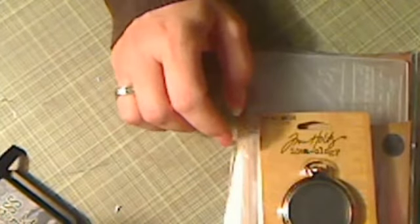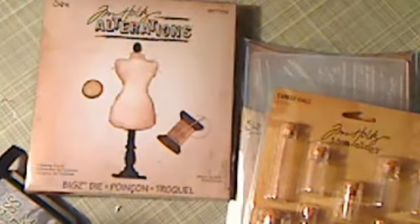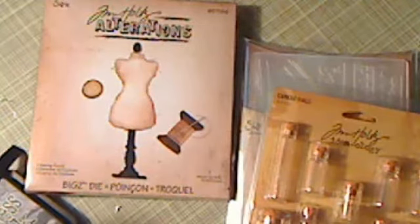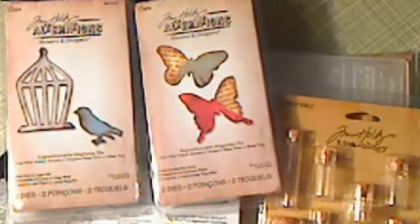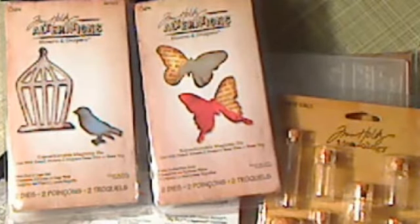So that's where I was going with that. I picked up one of the pocket watch frames, this one, I got a package of the vials, and then I got some dies, which was why I made the order. I picked up the sewing room die, and then I also picked up the base tray, and then I got two of the movers and shapers. This is the mini birdcage, bird and cage set, and the mini butterfly set. So, those two.